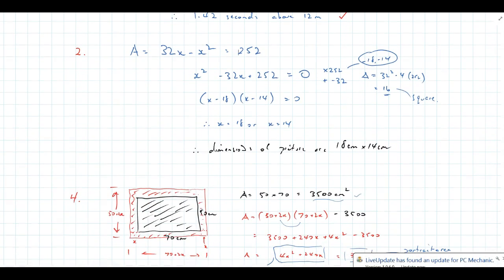Question 2 is asking for, or gives you the area of a rectangle, in terms of 32x minus x squared, which is right there, tells you that's equal to 252, so it's really just a matter of solving this equation.